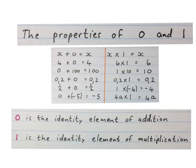One big word that you'll have to learn is that 0 is the identity element of addition and 1 is the identity element of multiplication.